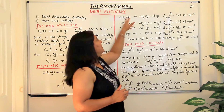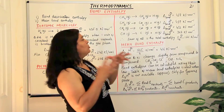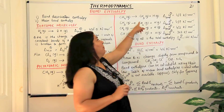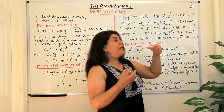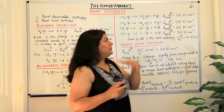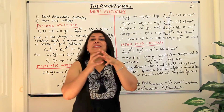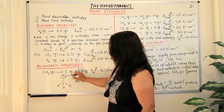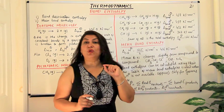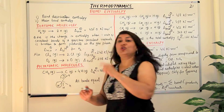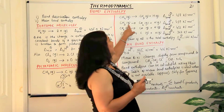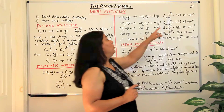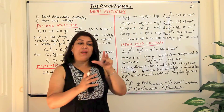When methane turns into CH₃ and one hydrogen is given out, the bond enthalpy for breaking that first bond is 427 kJ per mole. It doesn't matter which hydrogen comes out first since all four are identical. But in the next step, when the second hydrogen goes out from CH₃, we would expect the same energy, but it turns out to be 439 kJ per mole instead of 427 — more energy is required to break the second bond.